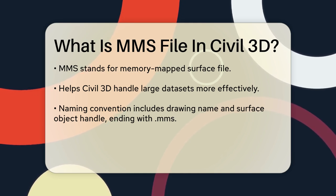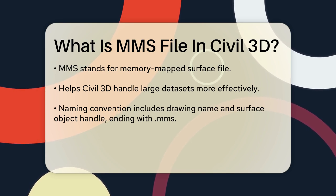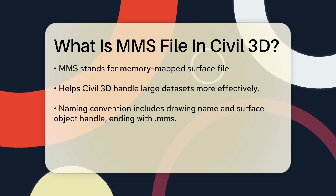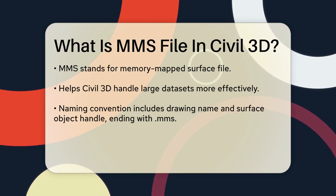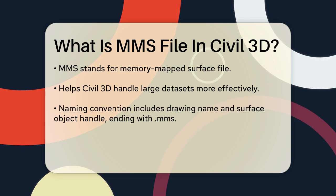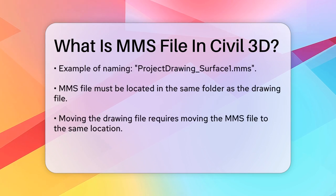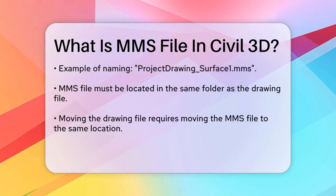The MMS file has a specific naming convention. It includes the drawing name and the surface object handle, followed by the MMS extension. For example, if your drawing is named ProjectDrawing and the surface object handle is Surface1, the MMS file would be named ProjectDrawingSurface1.MMS.